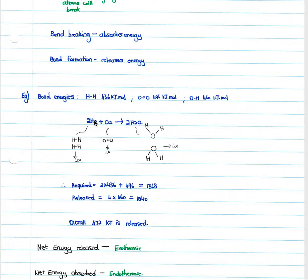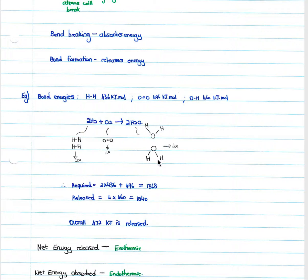The easiest way to do this calculation is to draw out what your bonds look like. You have two H–H bonds, one O=O double bond, and you form two H₂O molecules — each with two O–H bonds — giving four O–H bonds in total.